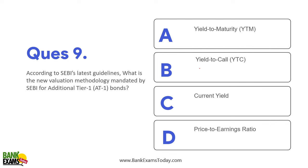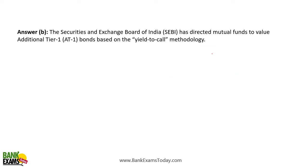According to SEBI's latest guidelines, what is the new valuation methodology mandated by SEBI for Additional Tier 1 bonds? It is Yield to Call. Yield to Call means you are assuming you are not going to sell the bonds until maturity.